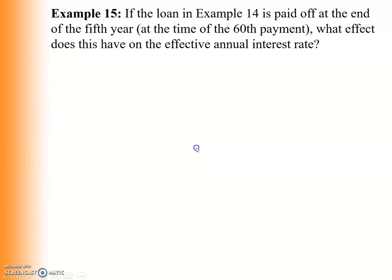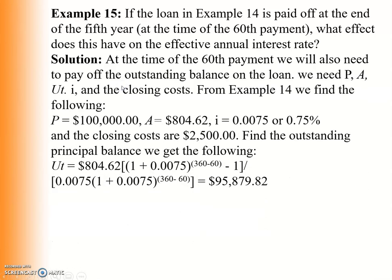For example, if the loan in Example 14 is paid off at the end of the fifth year at the time of the 60th payment, what effect does this have on the effective annual interest rate? Since the loan is paid at the end of the 60th payment, we must calculate the outstanding balance at that point.